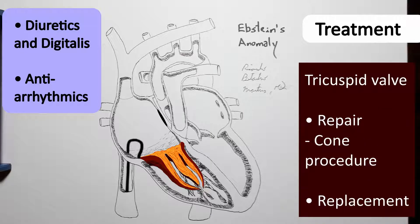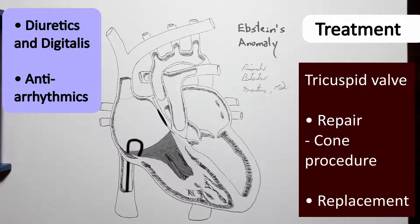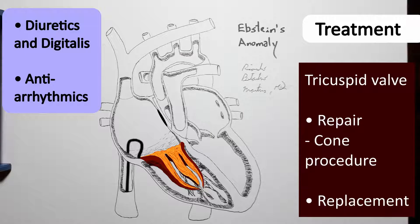There are many existing techniques and there is no consensus, although some centers show a preference for the Silvers cone repair technique, or cone procedure. Surgically replacing the valve is also possible, and a preference is given to bioprosthetic valves over mechanical valves.